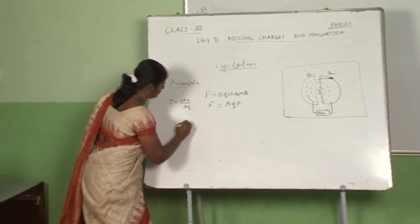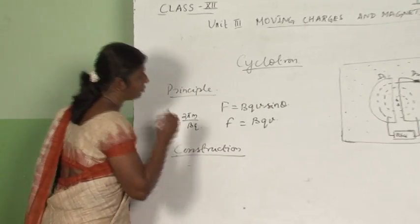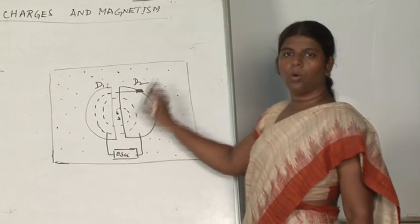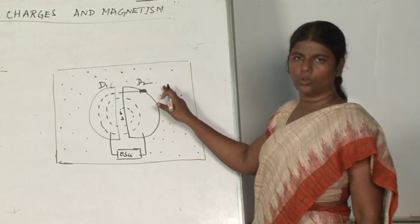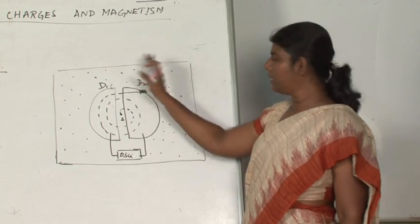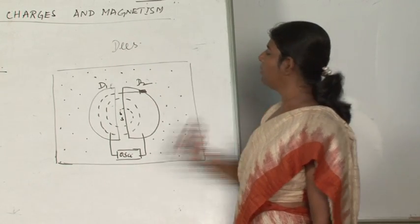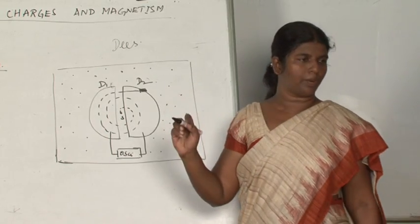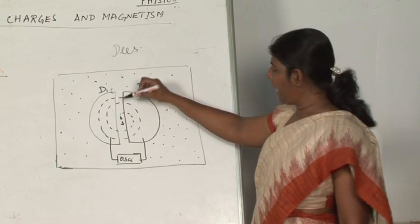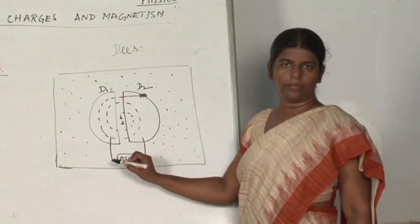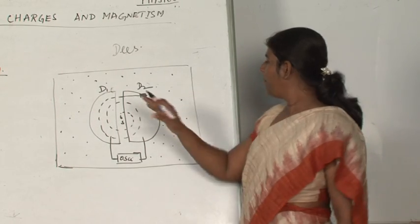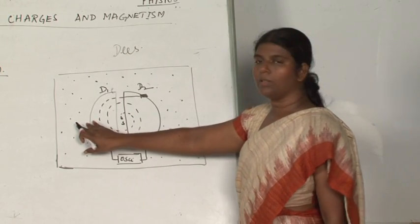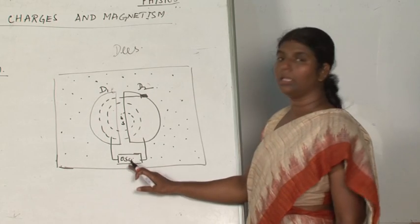Now we see the construction. Let S be the source kept inside two hollow metallic D-shaped electrodes, D1 and D2. The source produces charged particles — positive charges. These two Ds are connected to an oscillator, which produces alternating current. When D1 is positive, D2 is negative, and after some time the polarity reverses.